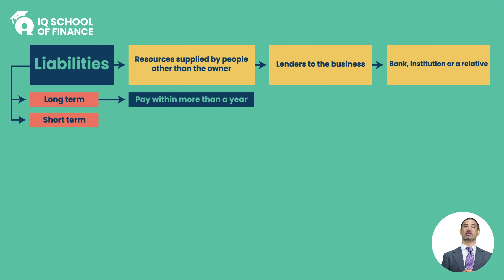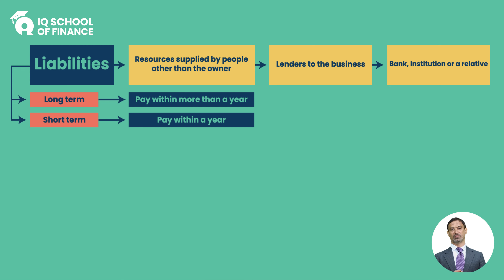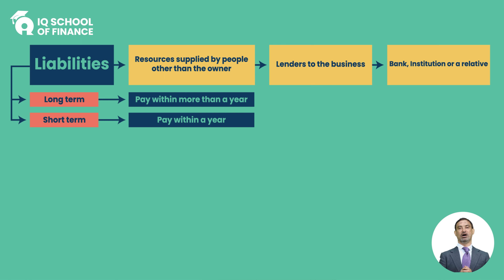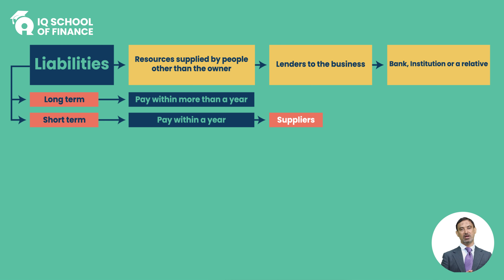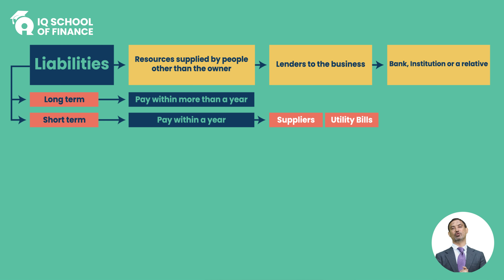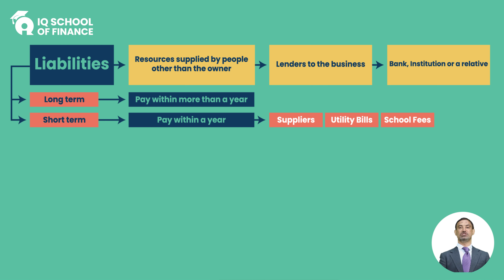On the other hand, current liabilities, that is short term liabilities: which can be settled within an accounting period - उसको pay off करने के लिए आपको लंबा अर्सा नहीं मिलता, कुछ दिन, कुछ महीने मिलते हैं। For example, accounts payable, creditors - यानि आपके suppliers जिनसे हम goods on credit लेते हैं, time period 30 days, 60 days, maximum 90 days। Utility bills, salaries जो employees को देने होते हैं - they all are called short term liabilities।